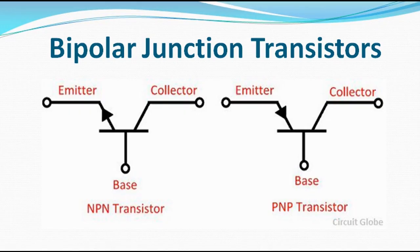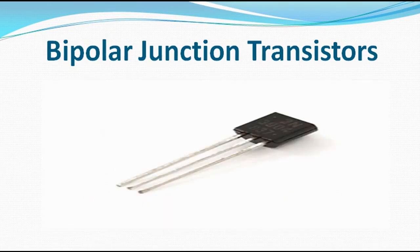You can see that in the PNP symbol the arrow is pointing downward, while in the NPN the arrow is pointing upward. When we discuss it in details I will give more explanation on this. Remember that BJT is a current-controlled device. Let's proceed to Field Effect Transistor.